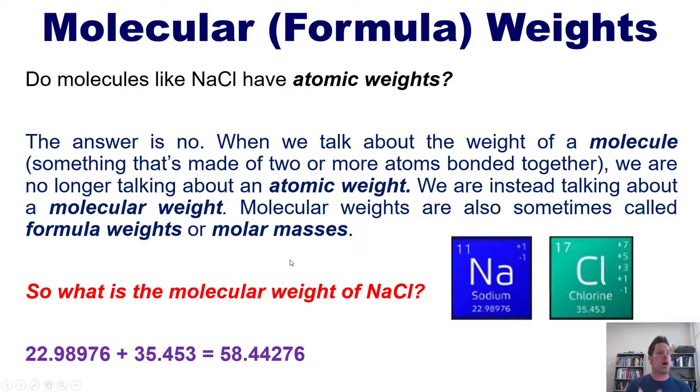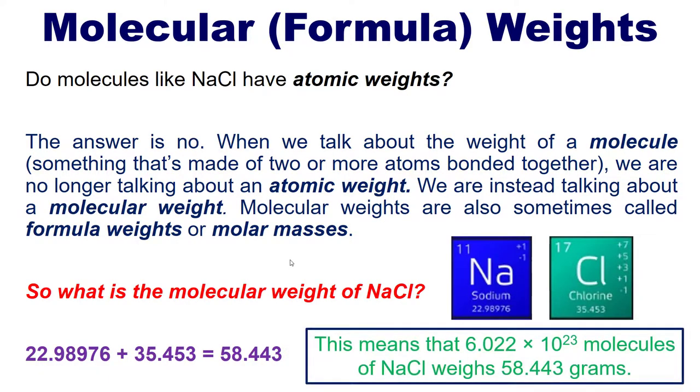Using our proper significant figure rounding rules for addition, which I discussed in an earlier video, you would get 58.443. This means that if you had 6.022 times 10 to the 23rd molecules of sodium chloride, it would weigh 58.443 grams.